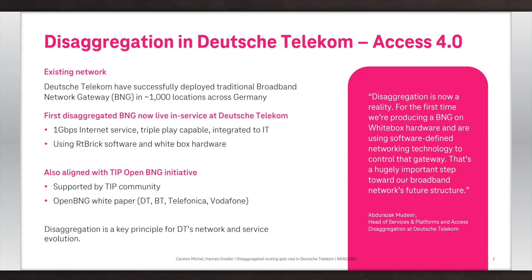Today, our network consists of roughly 1,000 points of presence across Germany. In these points of presence, we host network gateways — BNGs — to terminate customer traffic which is mainly IP over PPPoE. Customers include residential customers as well as business customers on the same platform. The main aim for the Access4.0 project is to provide high-speed internet services with triple-play support, but also business services in the future. In order to provide this in a very cost-efficient way and also preventing vendor lock-ins, we've decided to disaggregate software and hardware. Our goal is to get an open architecture which allows us to replace any component at any time and also allows us to integrate these components easily into our IT landscape.